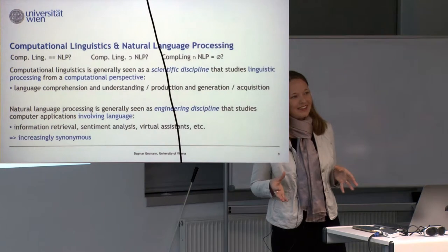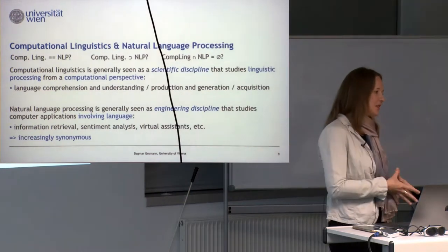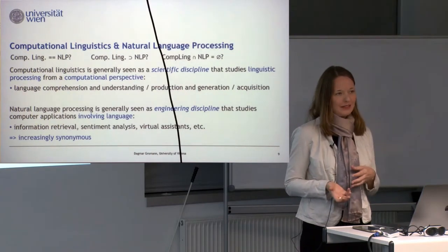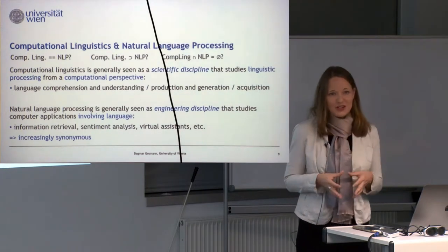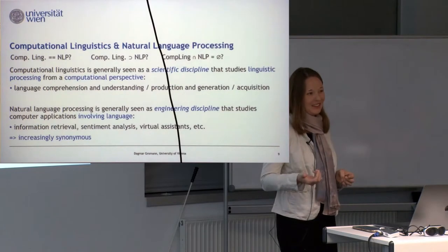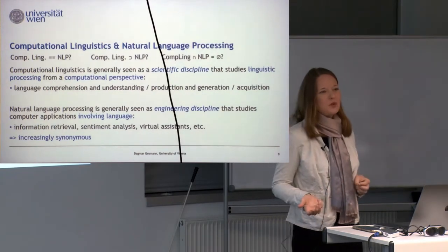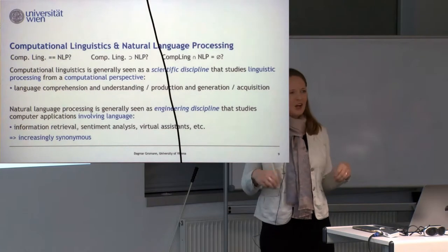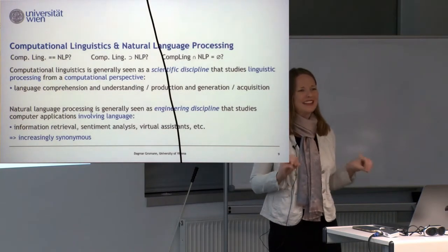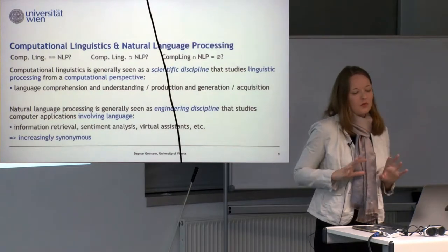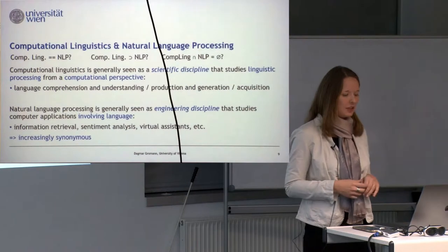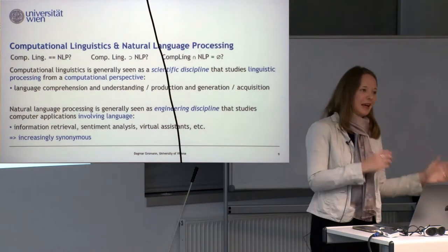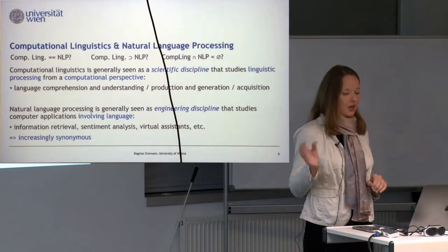Technically speaking, they're defined differently. Computational linguistics is mostly a scientific discipline where you look at linguistic processing from a computational perspective. Historically, they're also different — computational linguistics came later. First there was natural language processing, which was very much a computational engineering thing from computer scientists who didn't care much about linguistics. Today NLP is still defined as an engineering discipline with more industry applications, studying applications that involve language rather than studying language from a computational perspective.